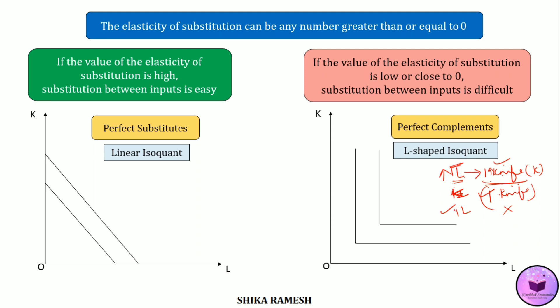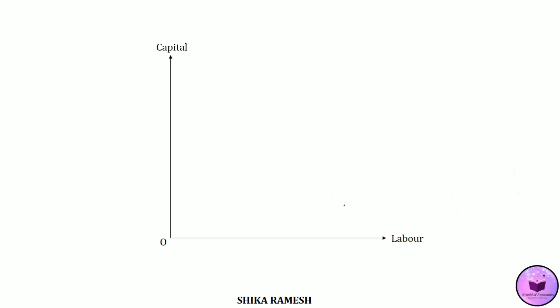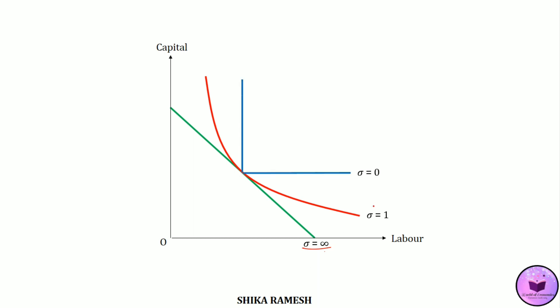In short, the elasticity of substitution shows not only the ease of substitutability between factor inputs but also the curvature of the isoquant. In this diagram, we can see different types of isoquants and their elasticity of substitution: a linear isoquant with sigma equal to infinity, a convex isoquant with sigma equal to 1, and an L-shaped isoquant with sigma equal to 0. As the value of sigma changes, the shape of the isoquant also changes. From the value of the elasticity of substitution as well as from the curvature of the isoquant, we can identify the ease of substitutability of factors. If you like the video, do subscribe to my channel and share the videos. Thank you.